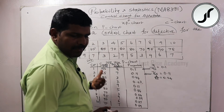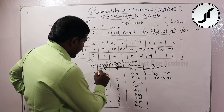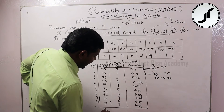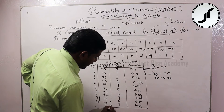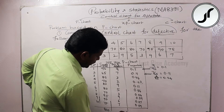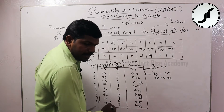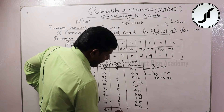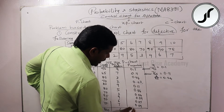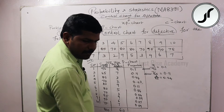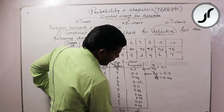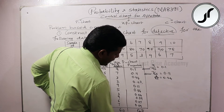Now we calculate the totals. Adding all sample sizes gives a total of 800. Adding all defective counts gives 60. Adding all proportion values gives 0.74.